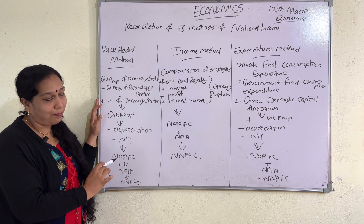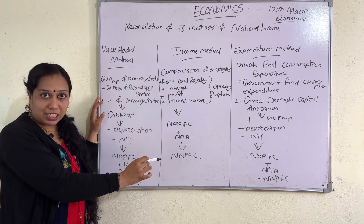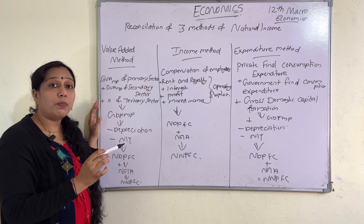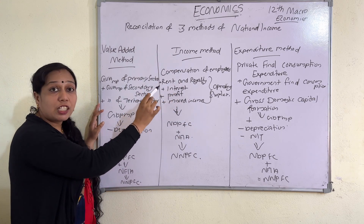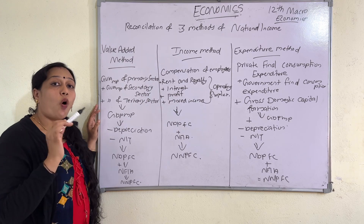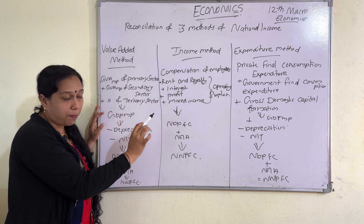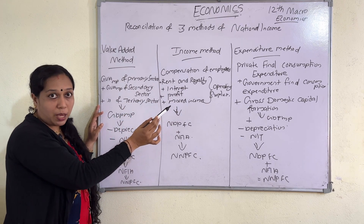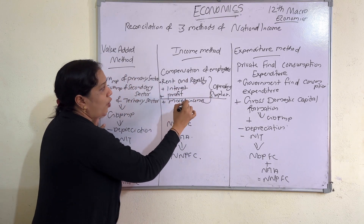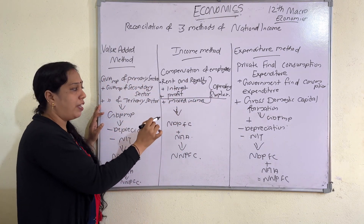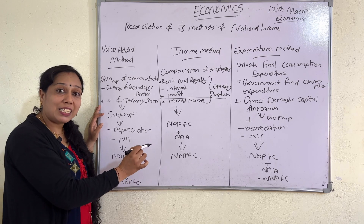Next is the income method. To calculate national income through the income method, the formula is: compensation of employees — meaning wages and salaries in cash and kind — plus rent, royalty, interest, and profit. Adding rent, interest, and profit gives you operating surplus. So: compensation of employees plus operating surplus plus mixed income. Mixed income is the income available to the producer through different means. Adding these three gives you NDP at FC. Then NDP at FC plus NFIA gives you NNP at FC, which is the national income.